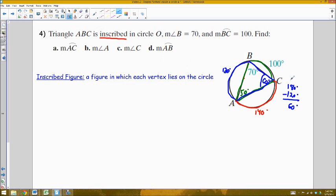When I go to answer these questions, now that I've solved each of these: the measure of AC is 140, the measure of A is 50, the measure of angle C is 60, and the measure of arc AB is 120.